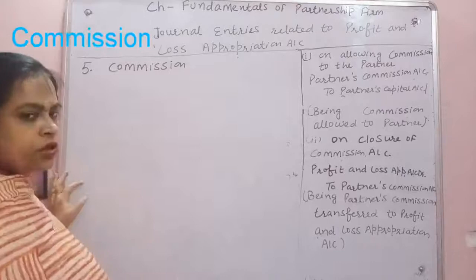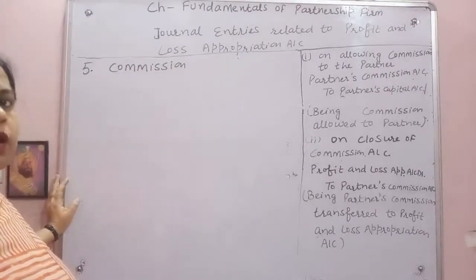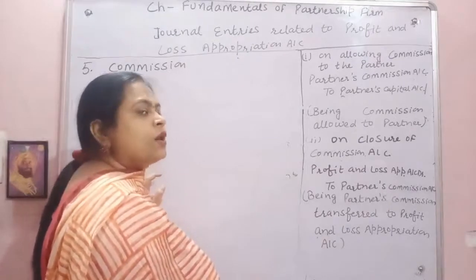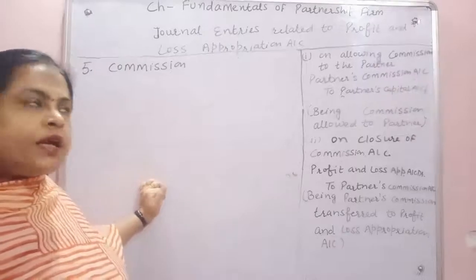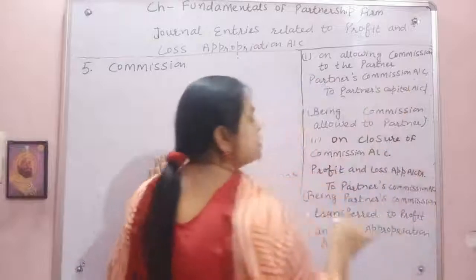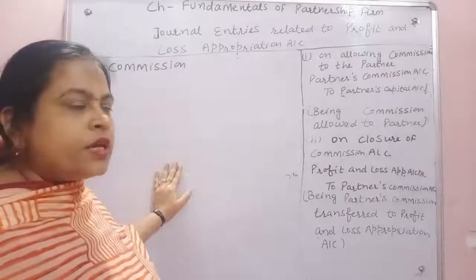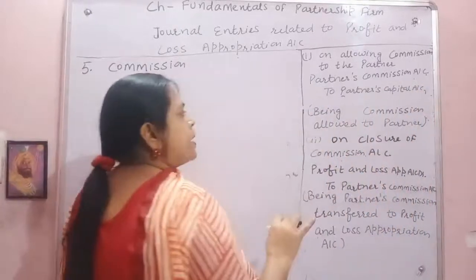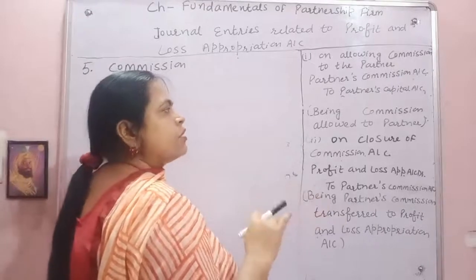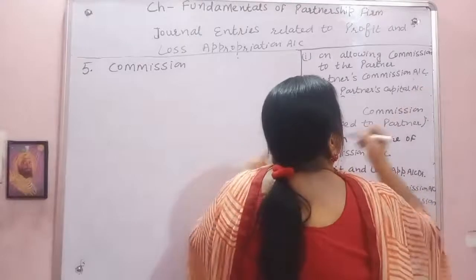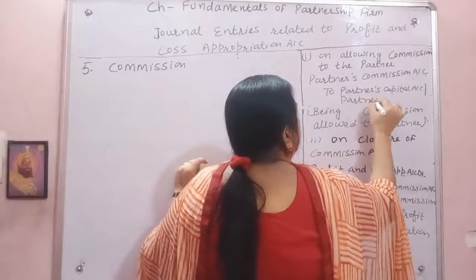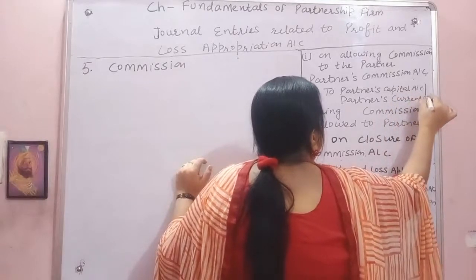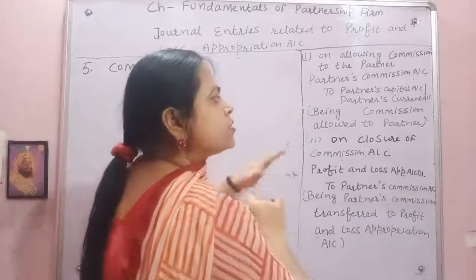Commission की entries: Commission partner के लिए income है, capital increase होती है, लेकिन business के लिए expense है। Profit and Loss Appropriation की debit में आता है। पहला part — allowing commission to partner: Partners Commission Account debit to Partners Capital Account (fluctuating) या Partners Current Account (fixed). Narration: being commission allowed to partner.